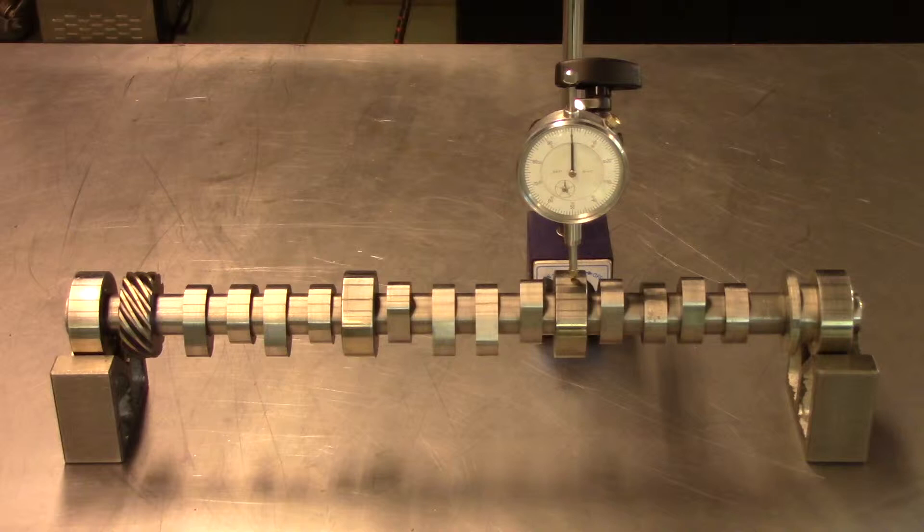Depending on the width of the camshaft journals, a run-out check can be performed using V-blocks and a dial indicator on your bench.